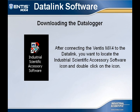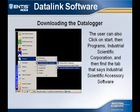After inserting the Ventus MX-4 into the data link accessory, the user must now locate the Industrial Scientific Accessory Software icon and double-click on that icon. If the user cannot easily locate it, they can click on the Start button on the computer's taskbar, then click on Programs, locate the Industrial Scientific Corporation tab, and click on it.